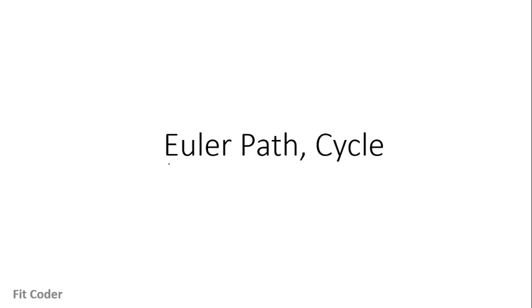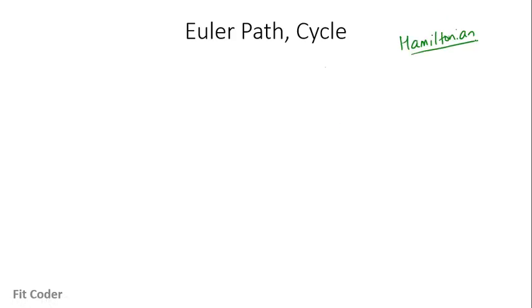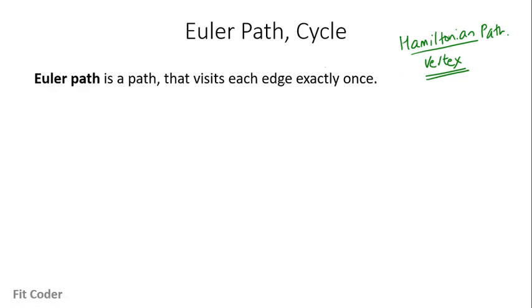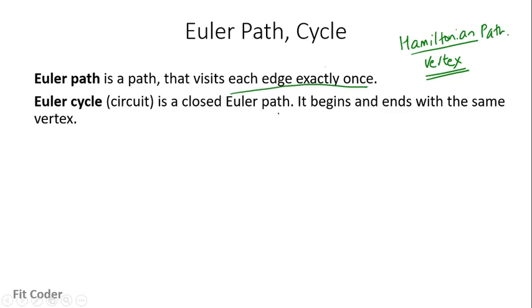In this video, I will be discussing Euler path and Euler cycle. In the previous video, we discussed Hamiltonian path in which we visit each vertex of the graph exactly once. Now, if we visit each edge of the graph then that path becomes Euler path — so here we visit each edge exactly once. And if the starting and end vertex is the same, then that path becomes Euler cycle, which is also referred to as Euler circuit.